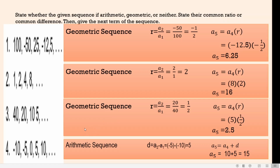For number 4, we have negative 10, negative 5, 0, 5, and 10, and so on. This one is an arithmetic sequence. To get the common difference, we have the second term minus the first term, which is negative 5 minus negative 10. Negative times negative 10 is equal to positive 10, so this will be negative 5 plus 10, which gives you 5. Our common difference is 5. To get the next term, we add A sub 4 plus the common difference: 10 plus 5. So the next term is 15.